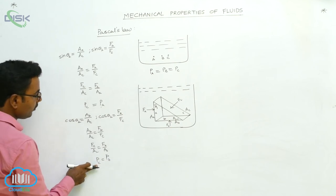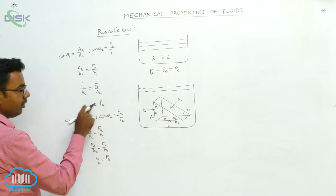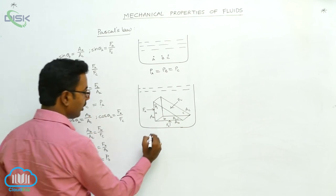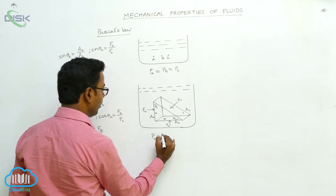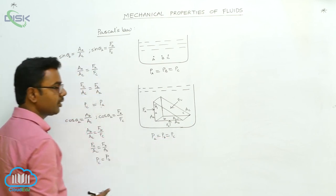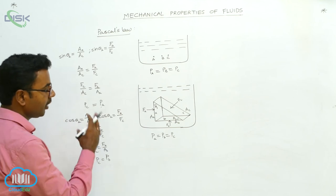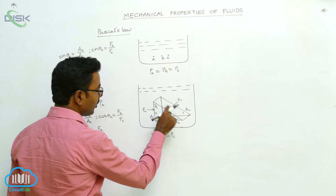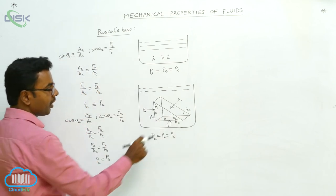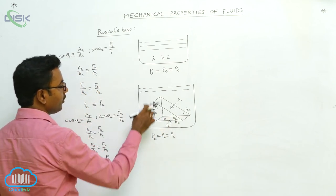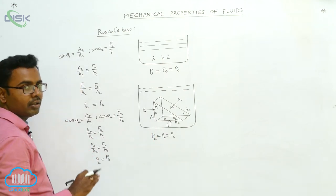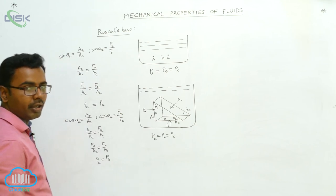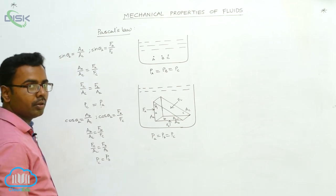Already, the pressure on face C equals the pressure on face A. So P_A, P_B, and P_C are mutually equal. We can write P_A equals P_B equals P_C, so the pressures acting on faces A, B, and C are equal. If the right-angled prism is very small, then the faces A, B, and C are at the same horizontal level. If the level is the same, the pressures are the same. So this is proved: P_A equals P_B equals P_C.